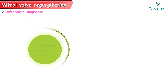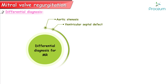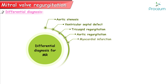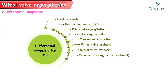Differential diagnosis. The differentials include aortic stenosis, ventricular septal defect, tricuspid regurgitation, aortic regurgitation, myocardial infarction, mitral valve prolapse, mitral valve stenosis, acute bacterial endocarditis, and hypertrophic cardiomyopathy.